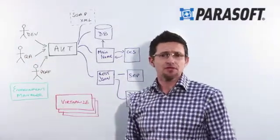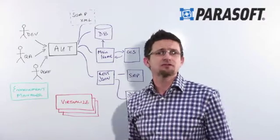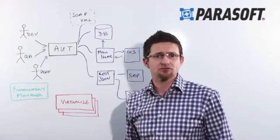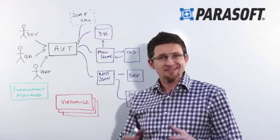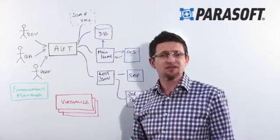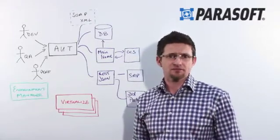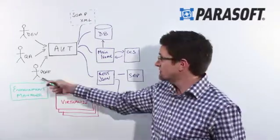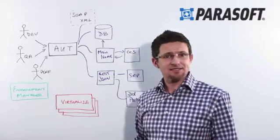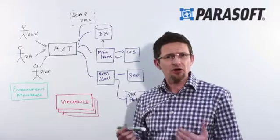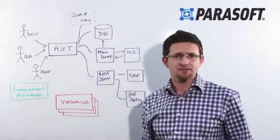Development teams need quick access to an environment so they can perform validation of the functionality they've just created. QA needs to be able to take those initial validations and really start to build up more functional scenarios. Also the performance testing teams need a system where they're not bottlenecked by any of the different backend components.